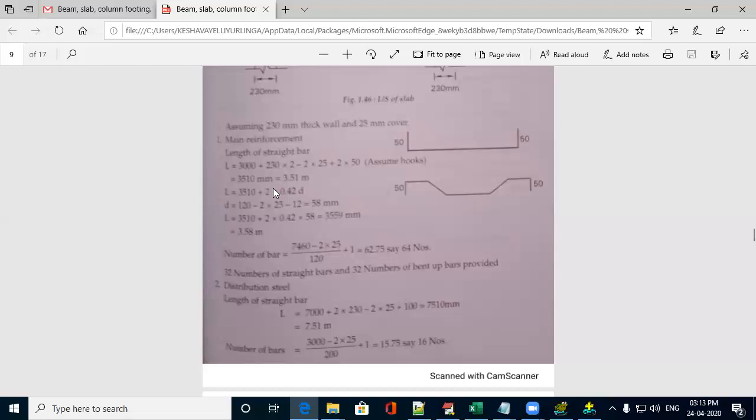D calculation is also same as like beam. Total depth is, depth of the slab is 120mm, minus 2 times the cover, minus 2 times the, sorry, minus 12 by 2, minus 12 by 2. That comes to minus 12. So, D will be 58mm.